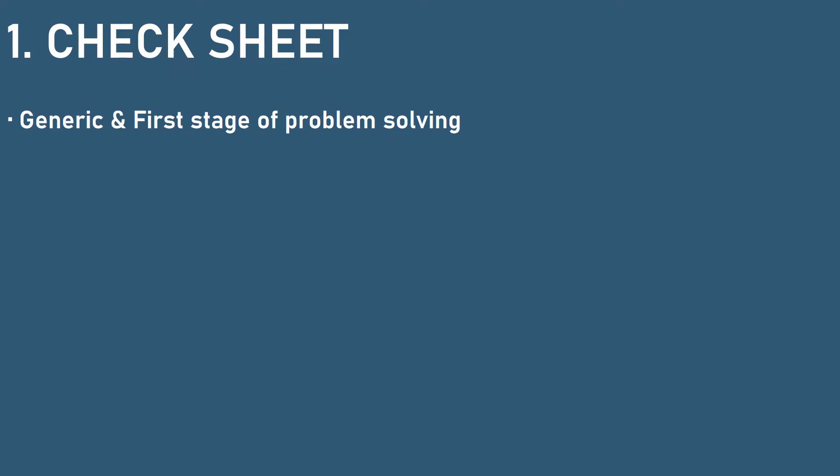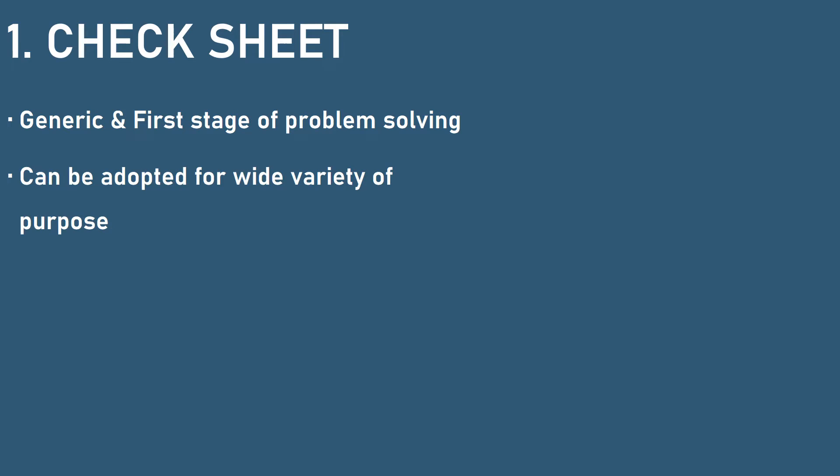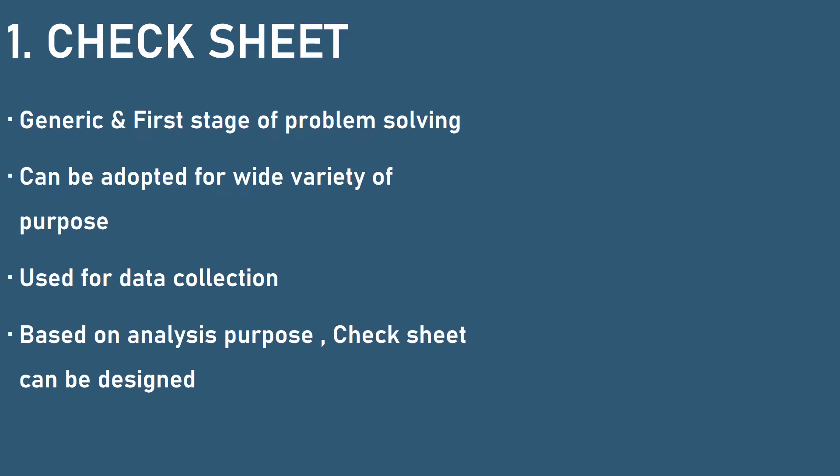Check sheet is the first of the 7 QC tools. In our day-to-day life, we use so many check sheets — even a to-do checklist is one type of check sheet. It is very generic and is the first stage of problem solving. It can be adopted for a wide variety of purposes and is used basically for data collection. Based on the analysis purpose, the check sheet can be designed — practice is required to design the checklist.